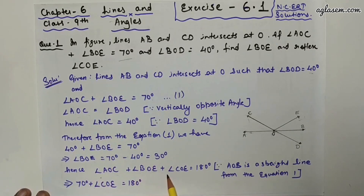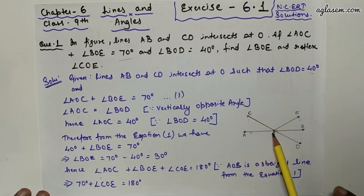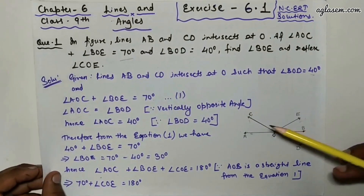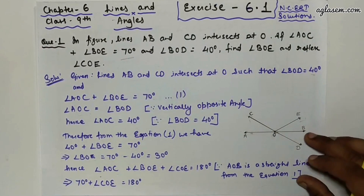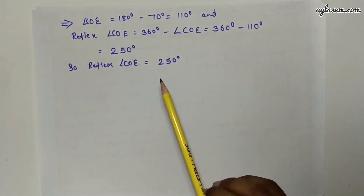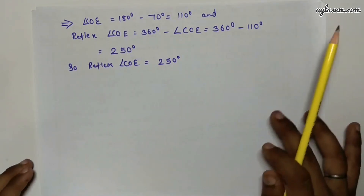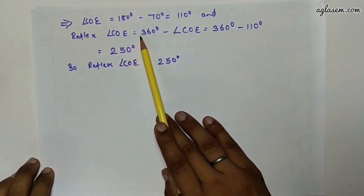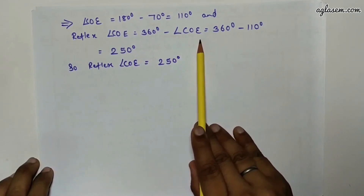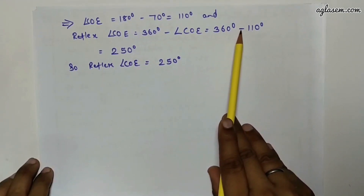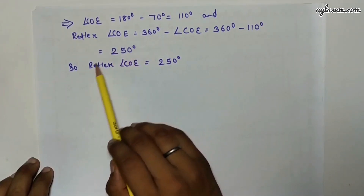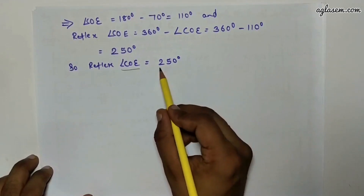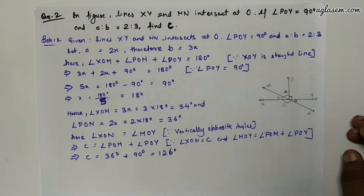Since AOB is a straight line: angle AOC + angle BOE + angle COE = 180°. So 70° + angle COE = 180°, giving angle COE = 110°. Therefore reflex angle COE = 360° − 110° = 250°.